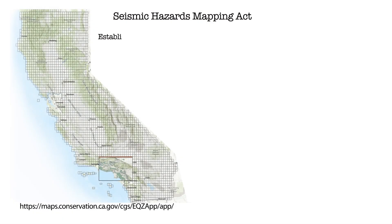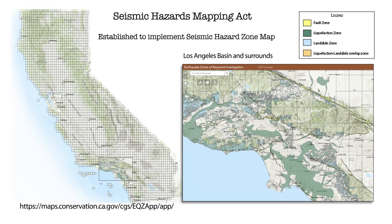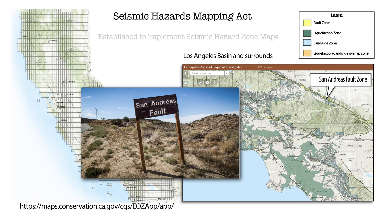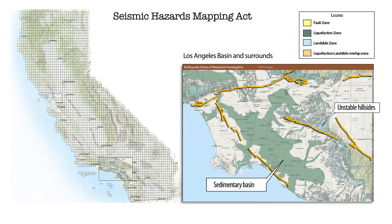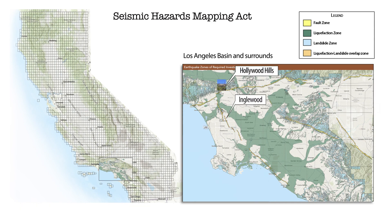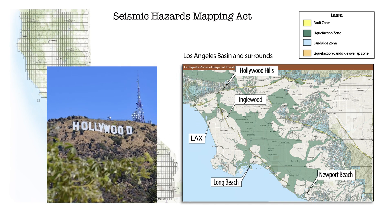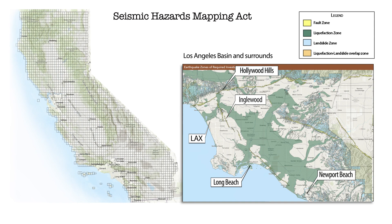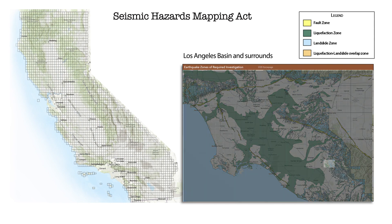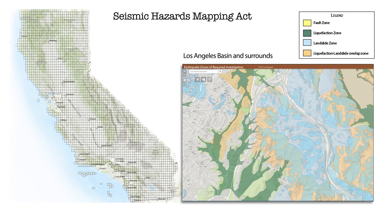The following year, the Seismic Hazards Mapping Act was established to implement seismic hazard zone maps. It requires the California Geological Survey to map areas that may be vulnerable to earthquake faulting, liquefaction, landslides, and tsunamis. These maps are distributed to cities, counties, and state construction agencies to help identify where these threats exist and where higher building standards may be necessary for safe development.